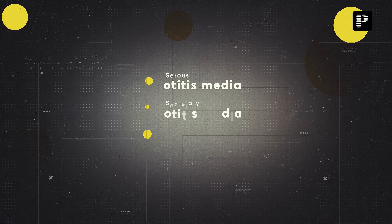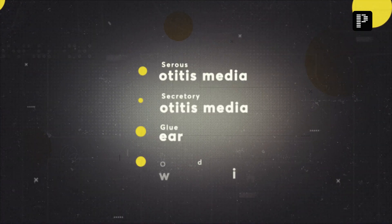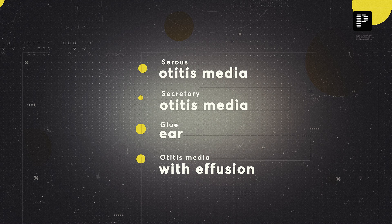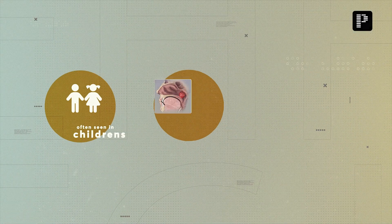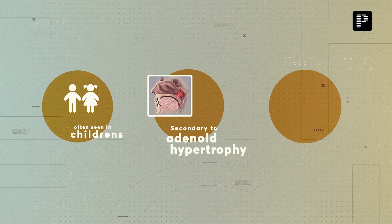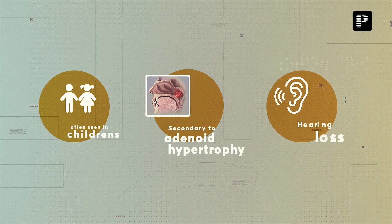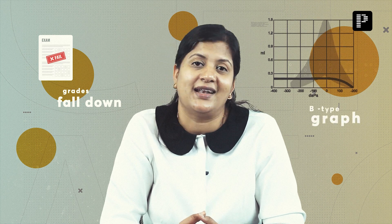So what was I talking about? A very, very simple disease called serous otitis media, secretory otitis media, glue ear, or otitis media with effusion — all of them are the same, which is your non-suppurative otitis media. Often seen in children, secondary to adenoid hypertrophy, presenting with hearing loss. The teacher complains because the child is not able to hear, is inattentive at school, grades fall down, and the tympanogram is diagnostic showing a B-type gram.